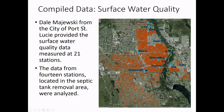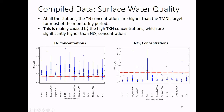We first compiled surface water quality data, because that's the concern to the cities and county. Data from the City of Port St. Lucie provided surface water quality measured at 21 stations — this is the St. Lucie River in the north part of the area, and there are canals too. We analyzed data from 14 stations located in the septic tank removal area, highlighted on the figure.